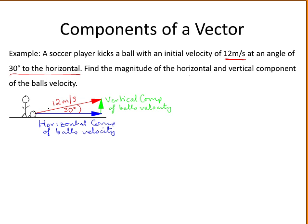This is a right-angle triangle, so the 90 degrees is here. Labeling our triangle: this is the opposite, 12 meters per second is the hypotenuse, and the horizontal component is the adjacent.